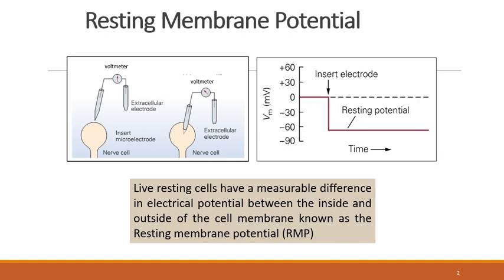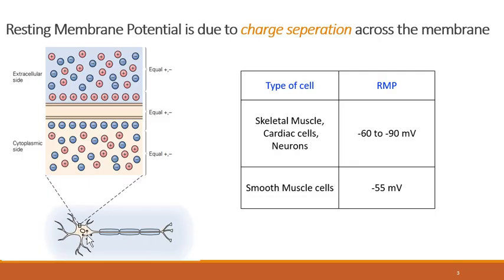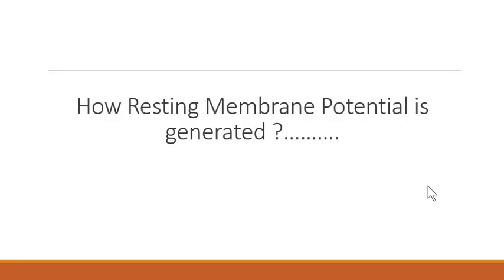At rest, the condition of the cell is inside negativity and outside positivity — that is called resting membrane potential. If we zoom into the membrane of a nerve at resting phase, there is positive charge extracellularly and negativity intracellularly. Different cells have different resting membrane potentials: skeletal and cardiac muscles have minus 60 to minus 90 millivolts, smooth muscles have minus 55 millivolts, and cardiac pacemaker tissue has the same RMP.